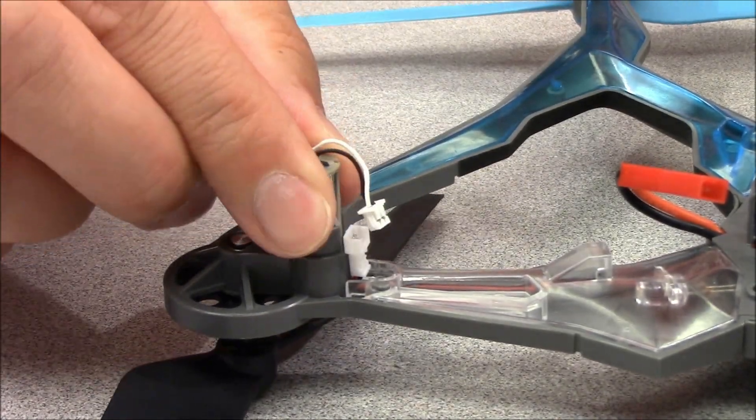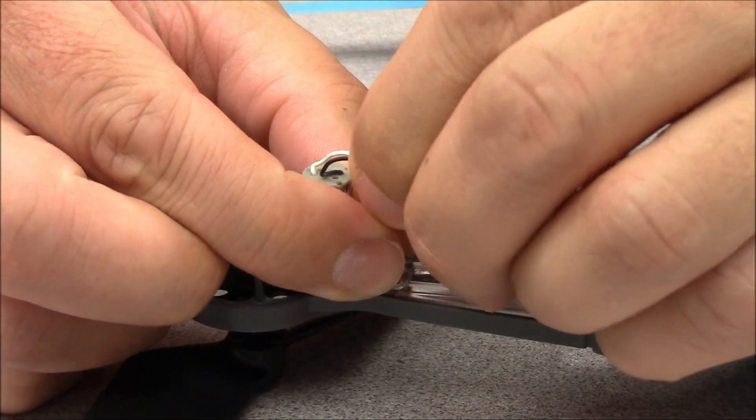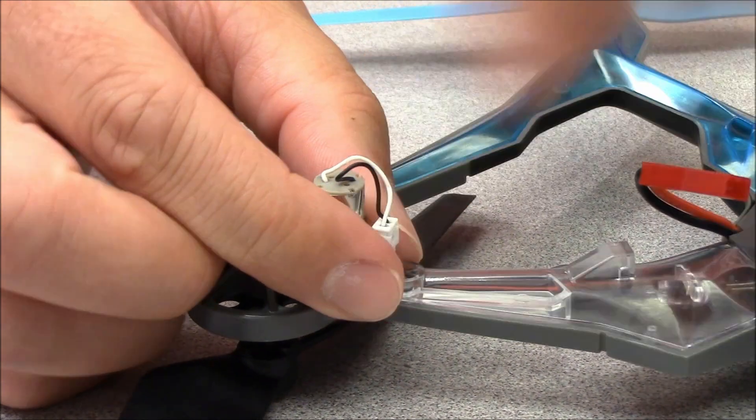Insert the replacement motor into the frame. Be sure that it's fully seated, then plug the connector back in. Give the wires a slight tug to make sure the plug is secure.